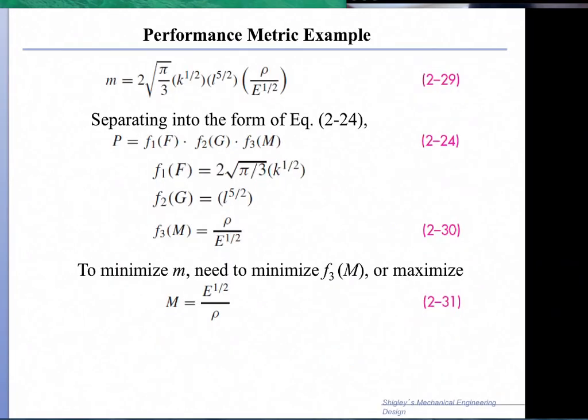If we go through this example, we find that we can separate the expression for the mass into three functions, where F1 is related to the stiffness, F2 related to the geometry, and F3 is the material property that needs to be minimized. We must now maximize the inverse, which is E to the 1/2 divided by rho.